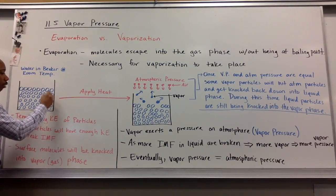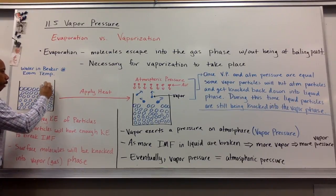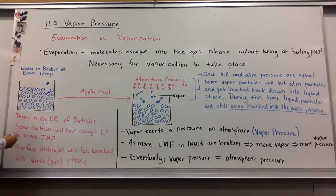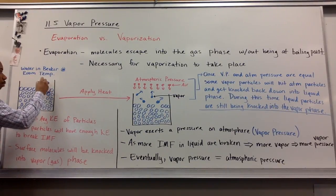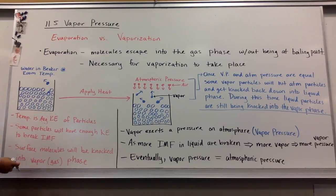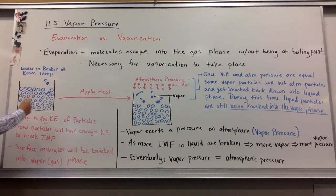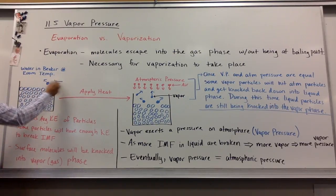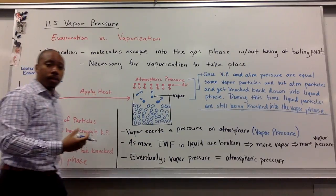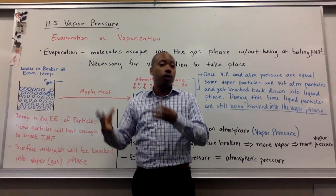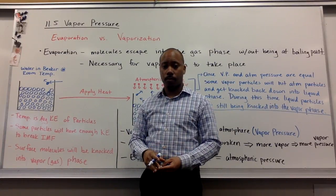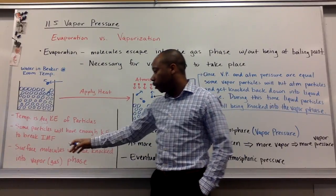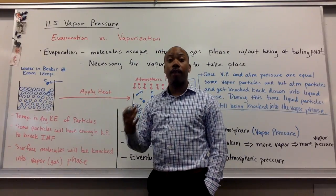Some particles will have enough kinetic energy to break the intermolecular forces holding them in the liquid phase and leave. For example, one fast particle hits a surface molecule, giving it enough energy to break free and become a vapor particle moving freely above the surface. This can happen over and over again to the surface molecules until we have gaseous particles above the liquid. This is called vapor — a gas particle that used to be in the liquid phase. Surface molecules being knocked into the vapor or gaseous phase is called evaporation.